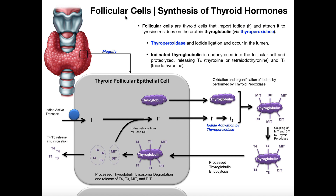Follicular cells are cells of the thyroid. The thyroid is an endocrine organ that actually hugs the trachea, so it's in the throat. The individual cells of the thyroid are called follicular cells and they're going to synthesize thyroid hormones. The full name is thyroid follicular epithelial cells, but generally people just call them follicular cells.